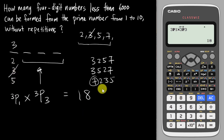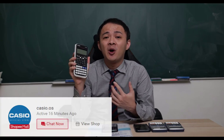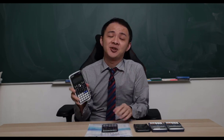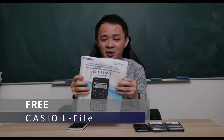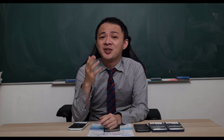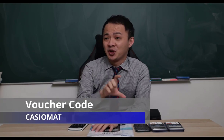I hope this short video helps you understand permutations and factorials. If you're interested in getting this calculator, I'll share a Shopee link in the description below. The link takes you to the Casio Official Store, where Casio Malaysia is running a promotion — you'll receive a free Casio L file and an RM5 discount using the voucher code provided.